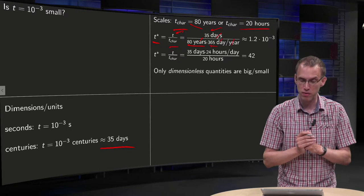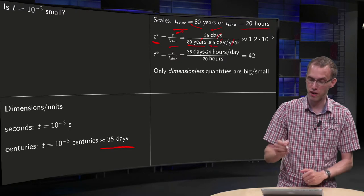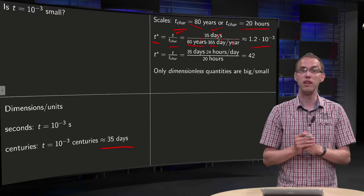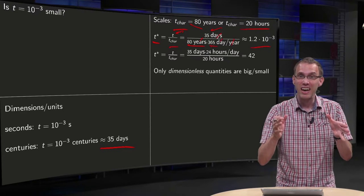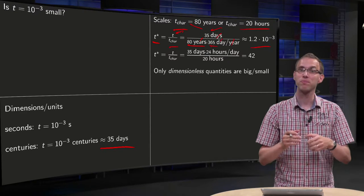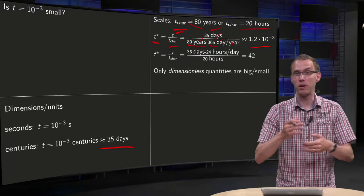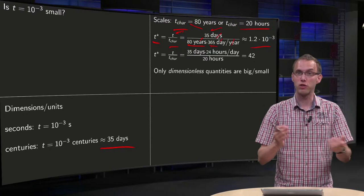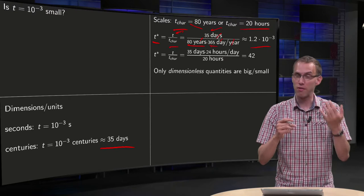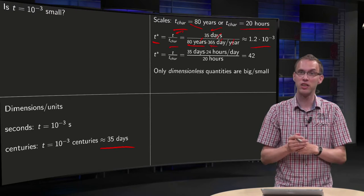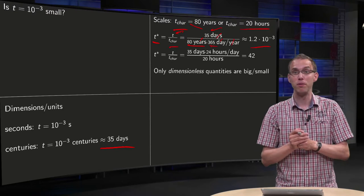and you get 35 divided by 80 over 365, which is approximately 1.2 times 10 minus 3, which is now a dimensionless quantity. So now you can say whether this is a small or large quantity, because now it doesn't have units anymore, it is dimensionless. Now you see it is a pretty small number.